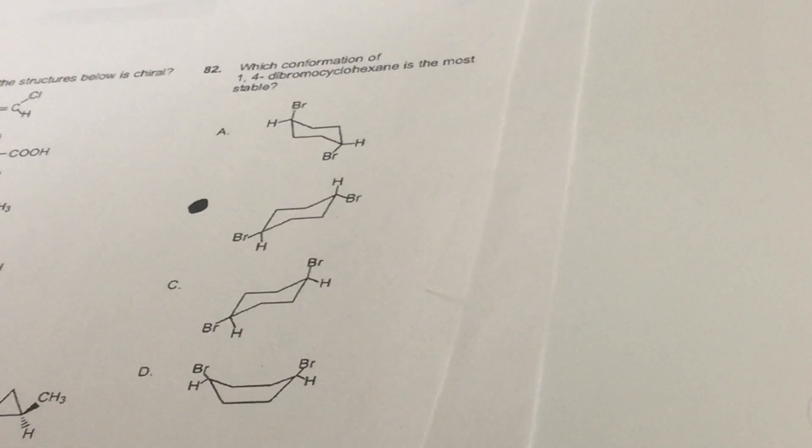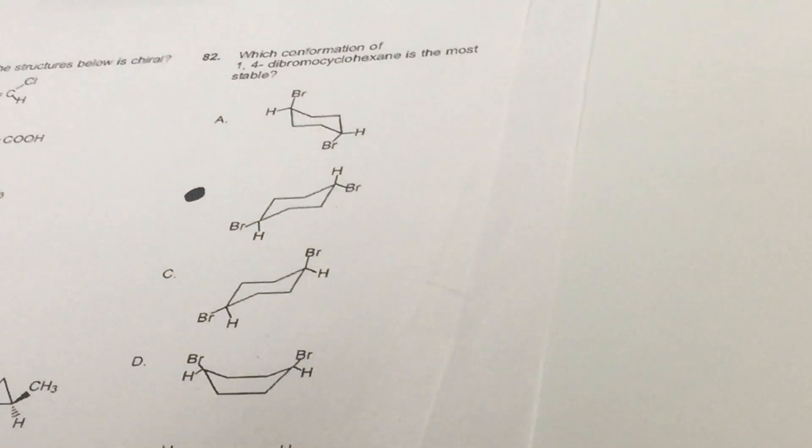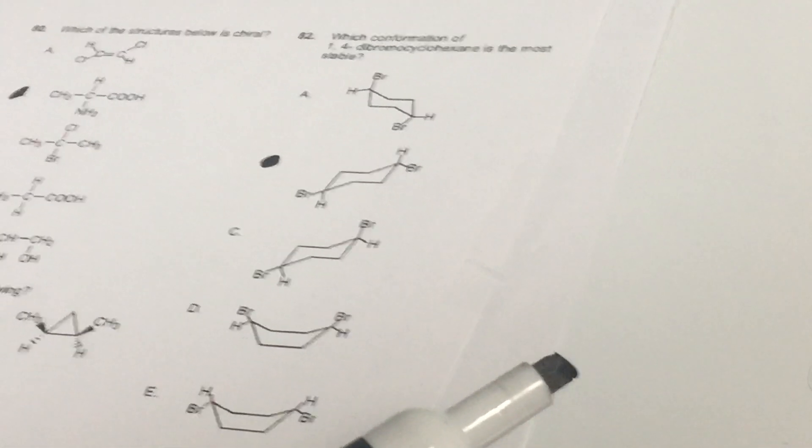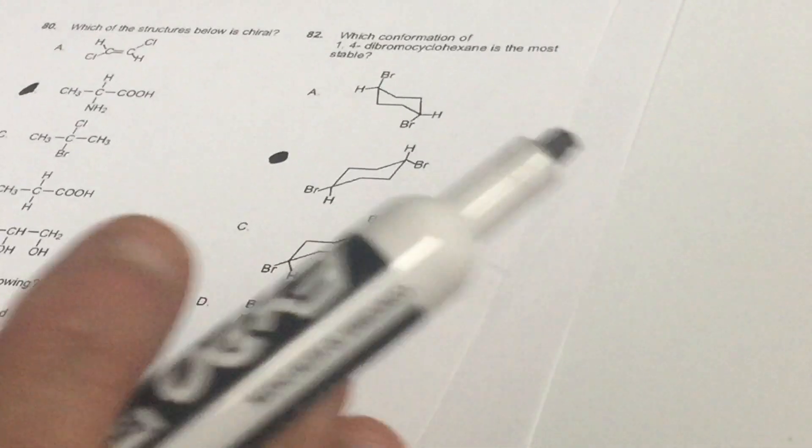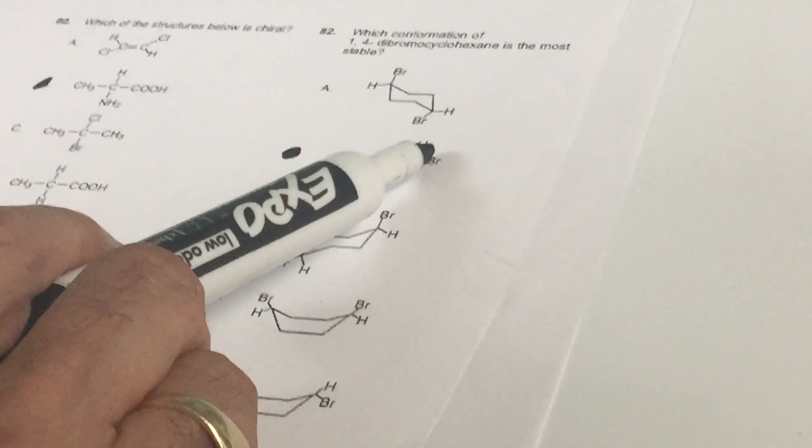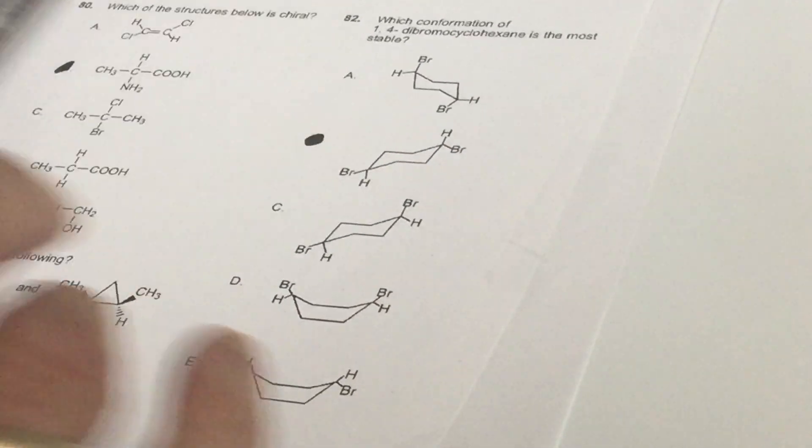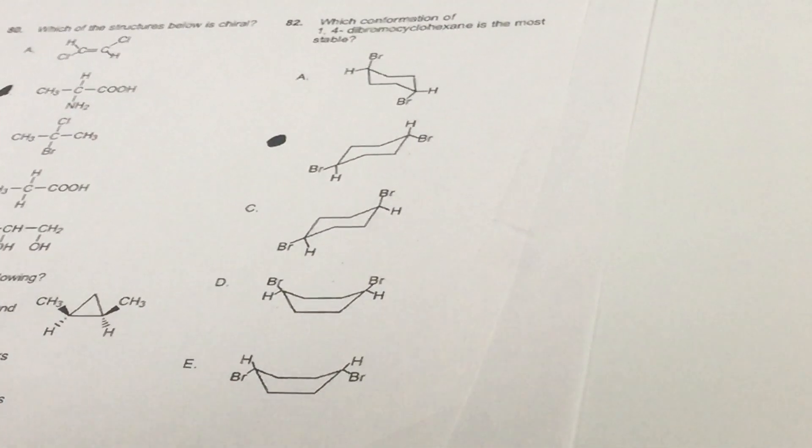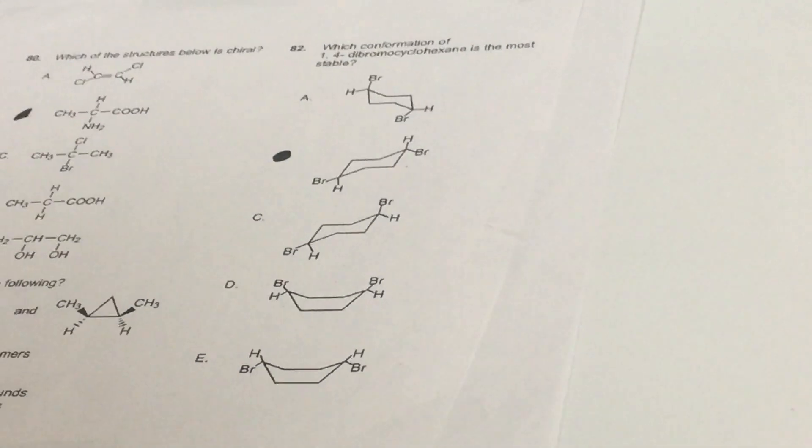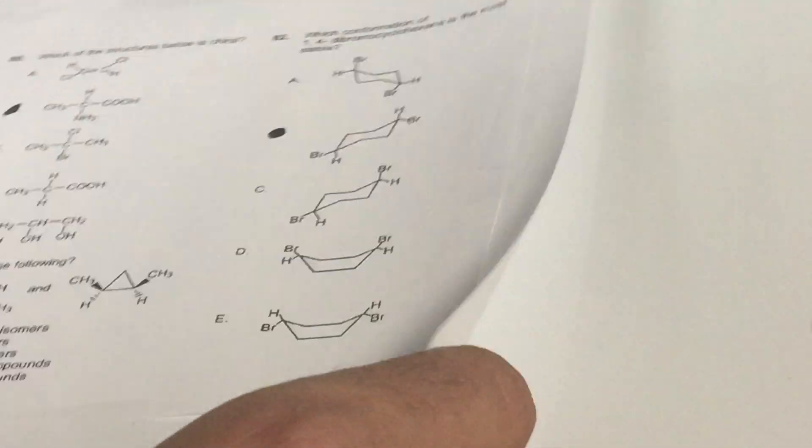The next one, we want to know which conformation is most stable of 1,4-dibromocyclohexane. If I tilt it a little tiny bit, this is horribly drawn by imbeciles who wrote this up. But as you can see, this bromine is equatorial, and this is equatorial. Even though this is not a good drawing, I understand what they mean. You want to go for the most groups in the equatorial position. I got a much more challenging question than this in the destroyer, but that makes this question an absolute freaking joke.